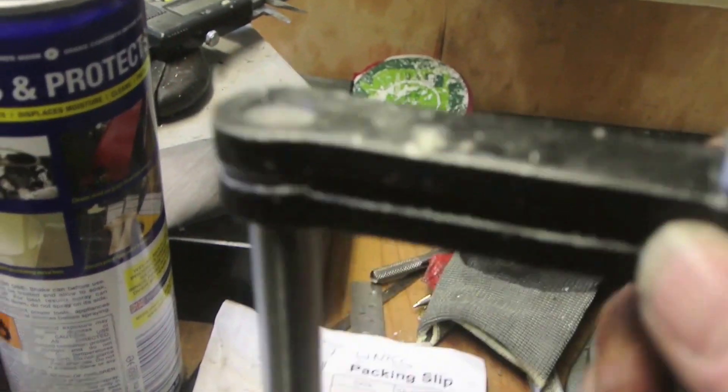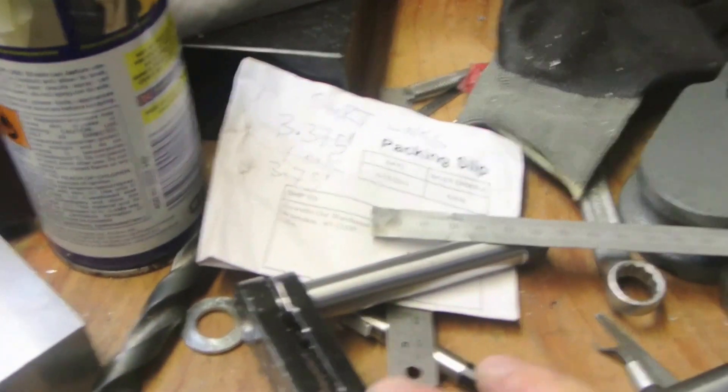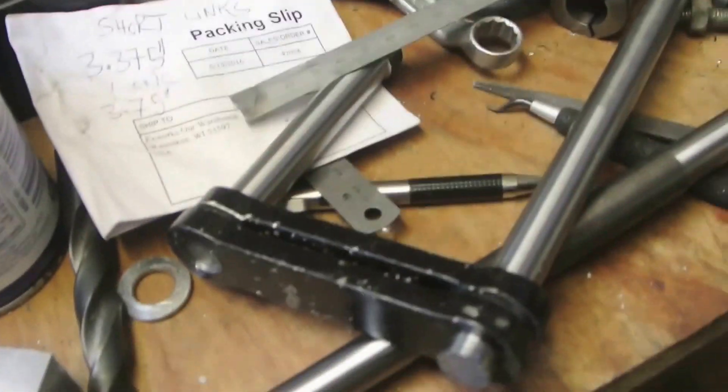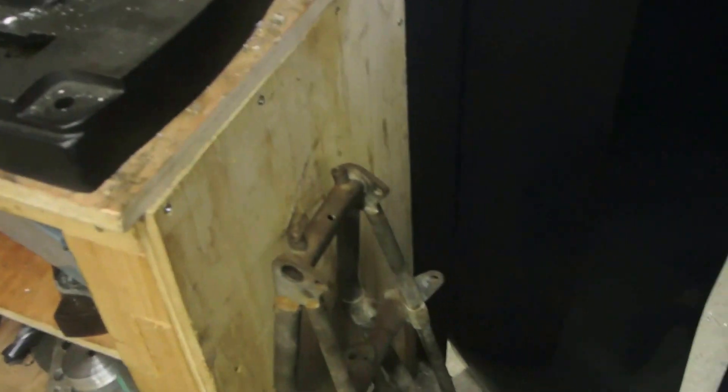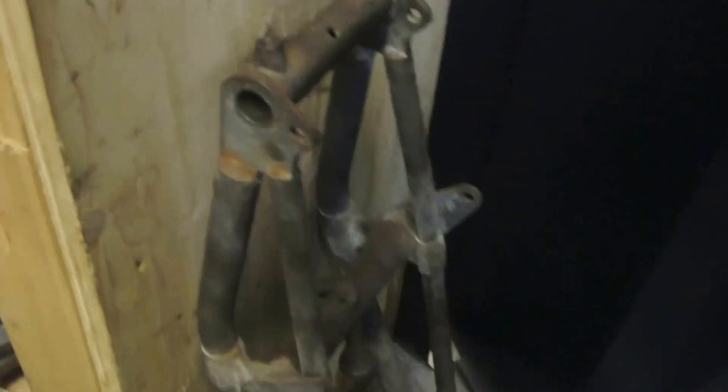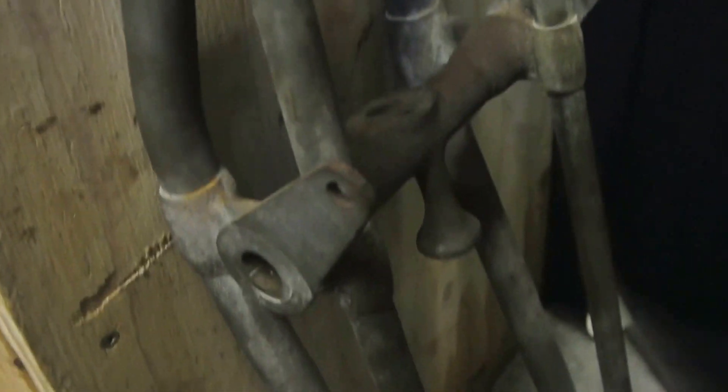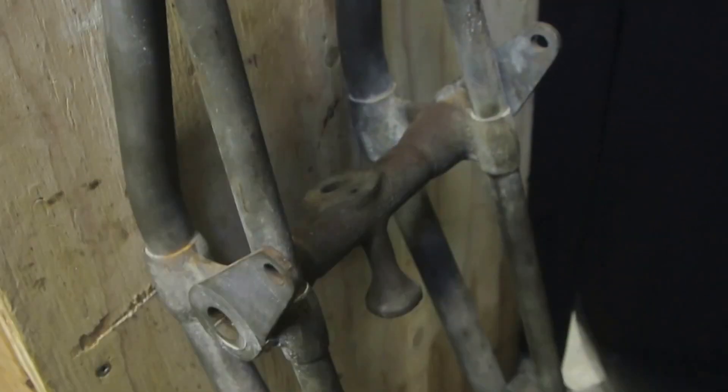This is a different job for a change. What I've got here is a pair of links for some BSA forks, 1940s. I think they're off an M20 or an M21 motorcycle. Thousands, hundreds of thousands of these were made for use during the second world war. Many a dispatch rider would have ridden them.